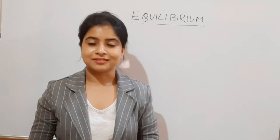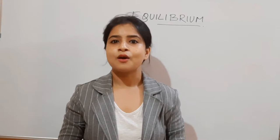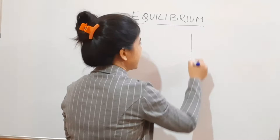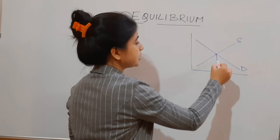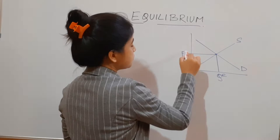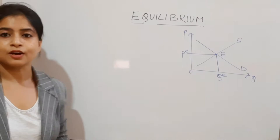Hello and a very warm welcome to another interesting session from Economics Media. Today's topic of discussion is equilibrium. In economics, the first thing that strikes our mind is where demand and supply are intersecting. If the demand curve is downward sloping and the supply curve is upward sloping, the point where they meet is the equilibrium output and price. This point E is our equilibrium.